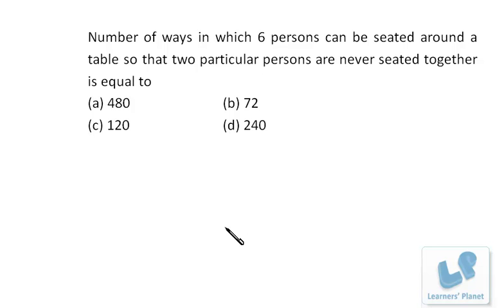In this question, the number of ways in which six persons can be seated around a table so that two particular persons are never seated together is equal to... I assume these two persons to be A and B.